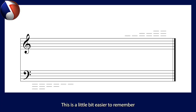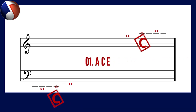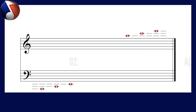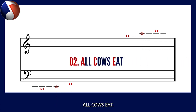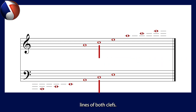This is a little bit easier to remember, as the ledger line notes spell out the word ACE — A, C, E. For those who love phrases or mnemonics, or a challenge, you can use 'All Cows Eat'. The same sequence of notes sits in between the staff lines of both clefs.